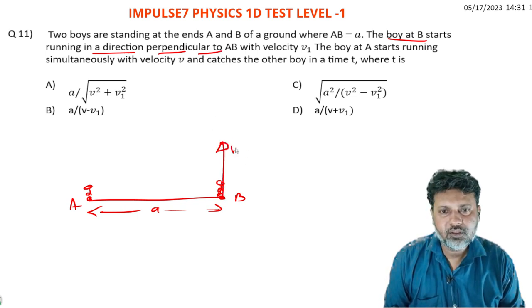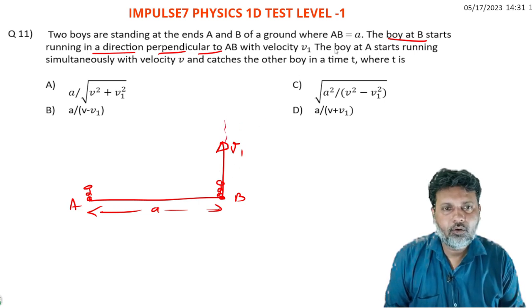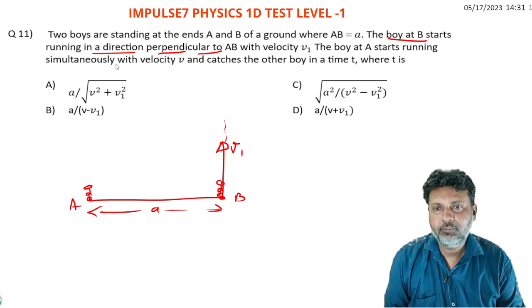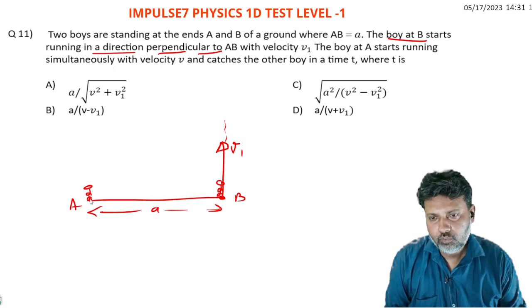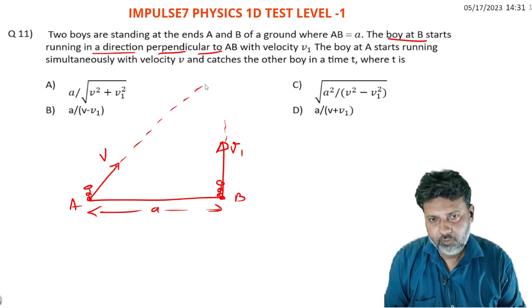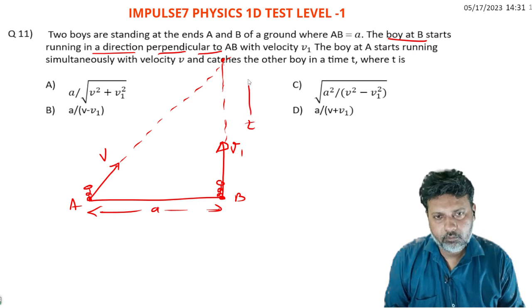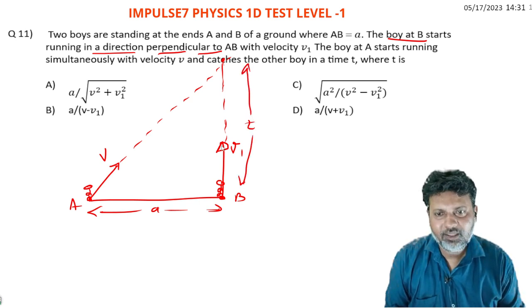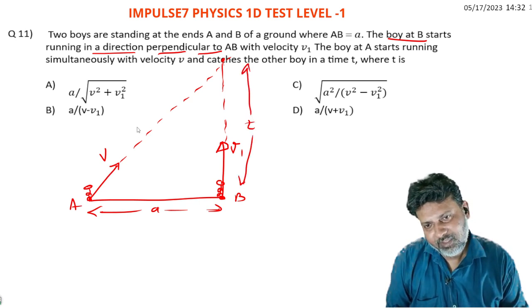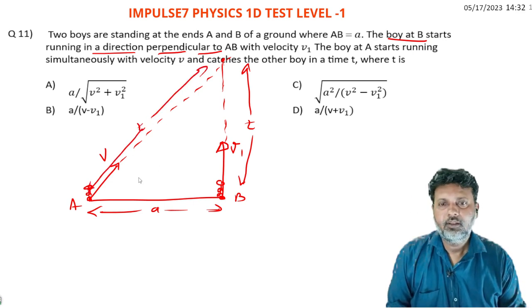Boy B runs with velocity v1 in this direction. The boy at A starts running with velocity v to meet him. We don't know the velocity v, but we have it as a variable. The time taken for them to be together is t - the catch time, the time to meet.